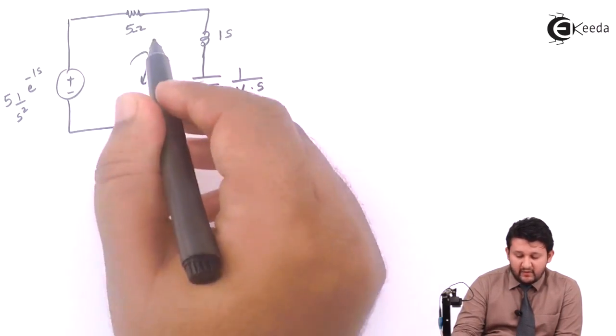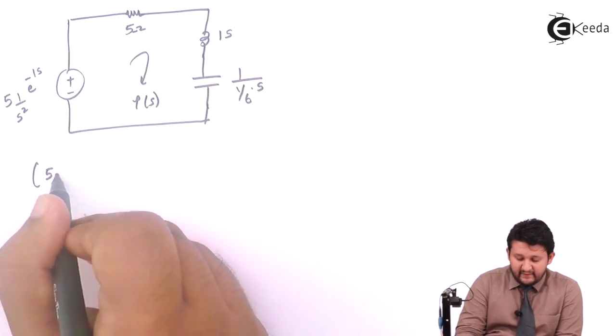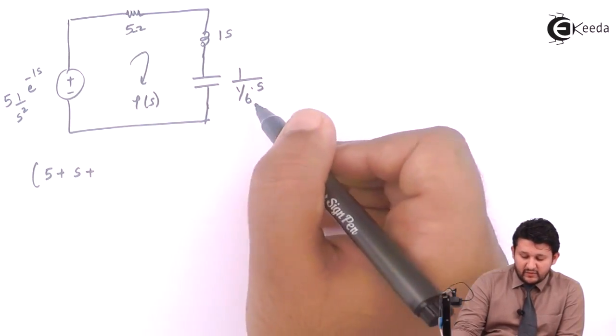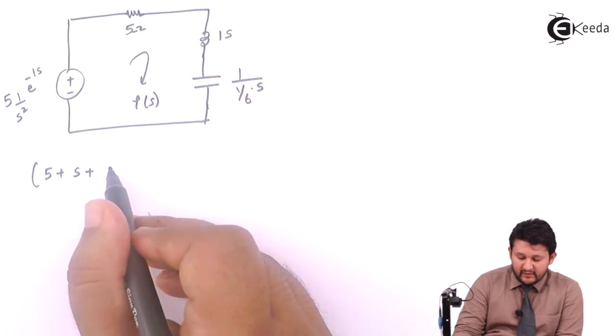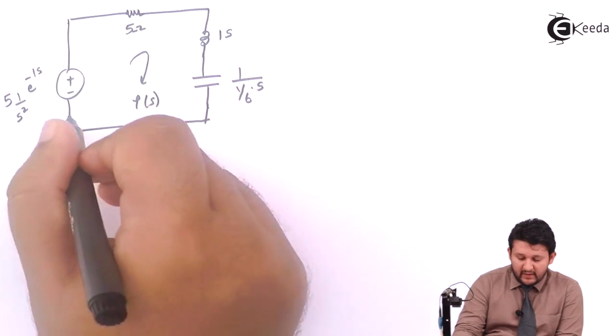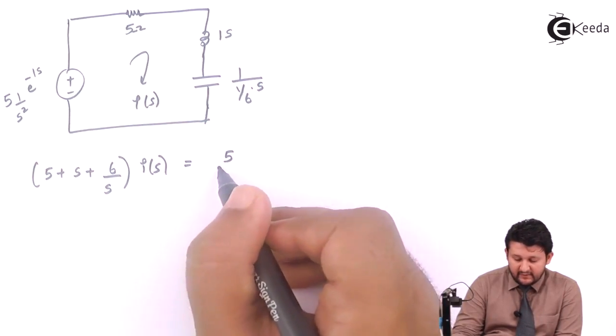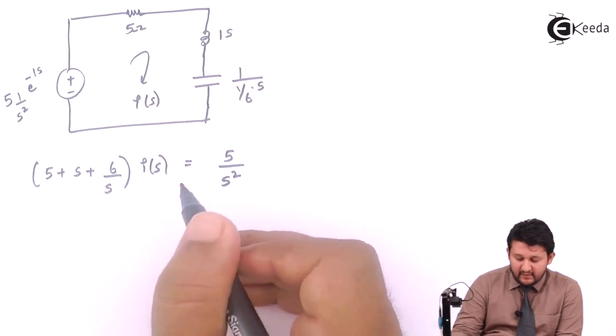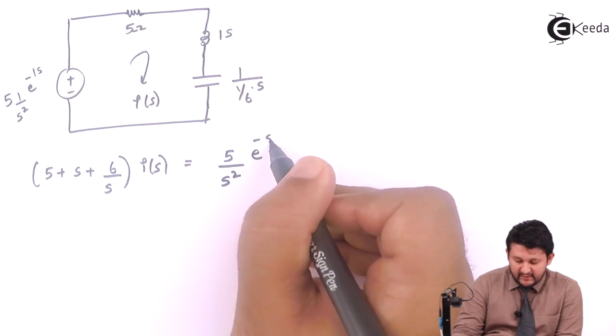Let's apply KVL. Add all the terms you get: phi plus S, so if we shift 6 of numerator, it will be 6 upon S into I of S equal to, your current end of the negative, so it will be positive, phi upon S square into e raise to minus of S.